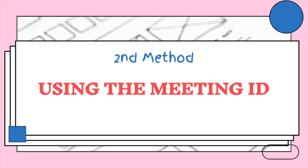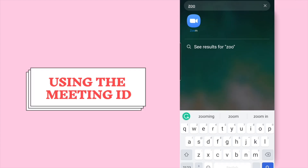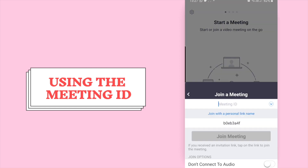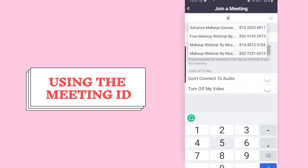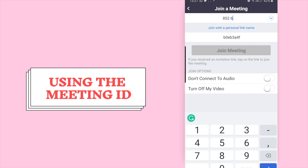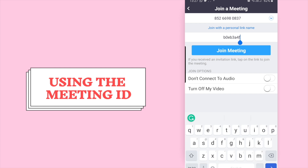Let's discuss the second method, which is using the meeting ID. First, open the Zoom app on your device, press 'Join Meeting', and enter the meeting ID. You can get this meeting ID from our helpline number or from the SMS and email that we have sent you.